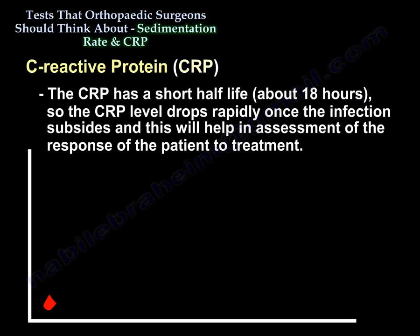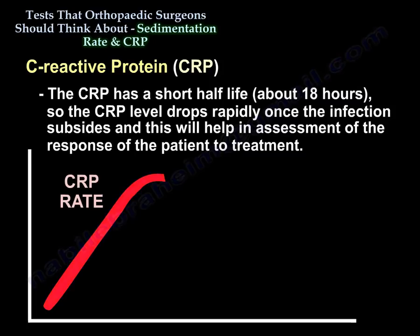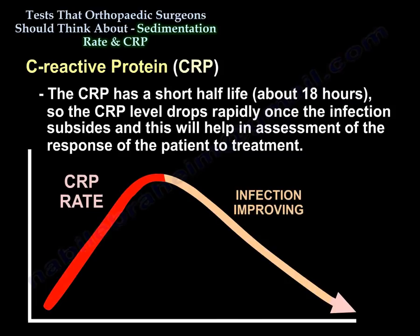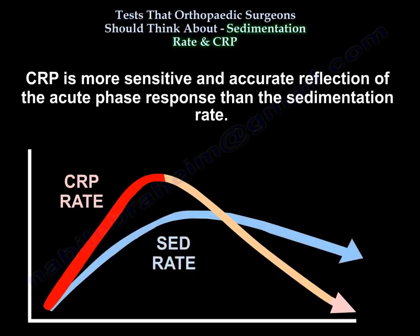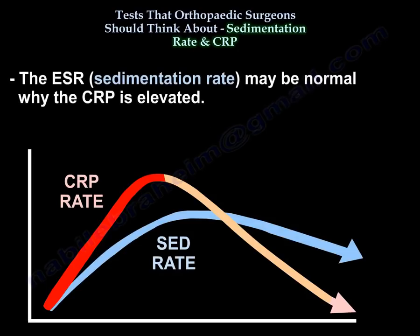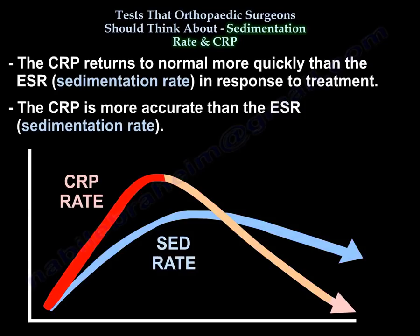The CRP has a short half-life of about 18 hours, so it drops rapidly once infection subsides, which helps in assessing the patient's response to treatment. CRP is a more sensitive and accurate reflection of the acute phase response than the sedimentation rate. The ESR may be normal while the CRP is elevated, and the CRP returns to normal more quickly than the ESR in response to treatment, making CRP more accurate than the sedimentation rate.